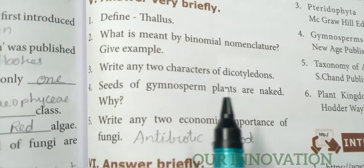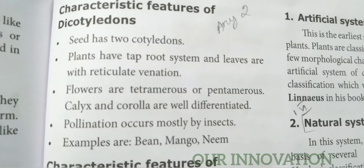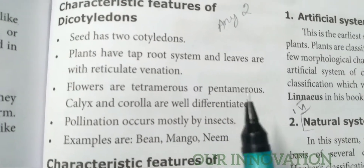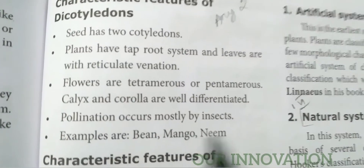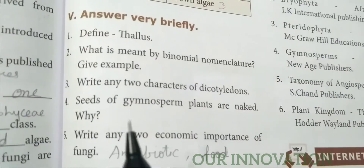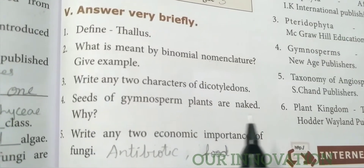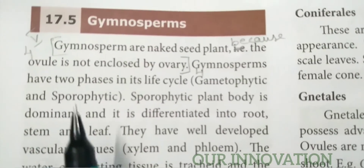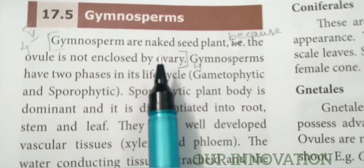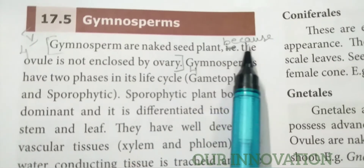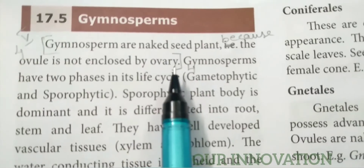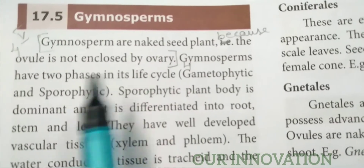Write any two characters of Dicotyledons — page number 199. Select any two characteristics of Dicotyledons. Seeds of Gymnosperm plants are naked. Page number 198. Gymnosperms are naked-seeded because the ovule is not enclosed by the ovary.